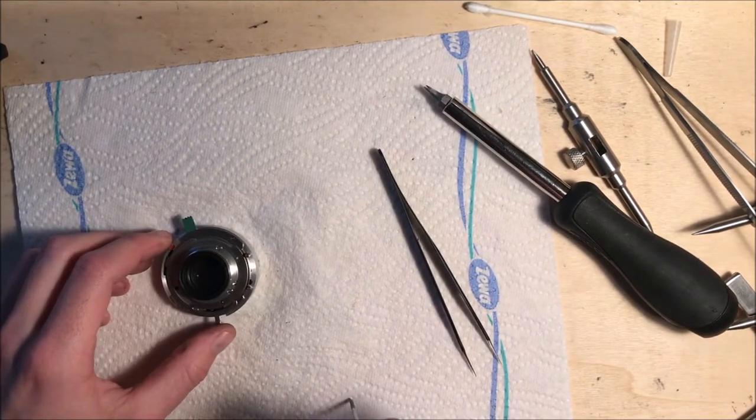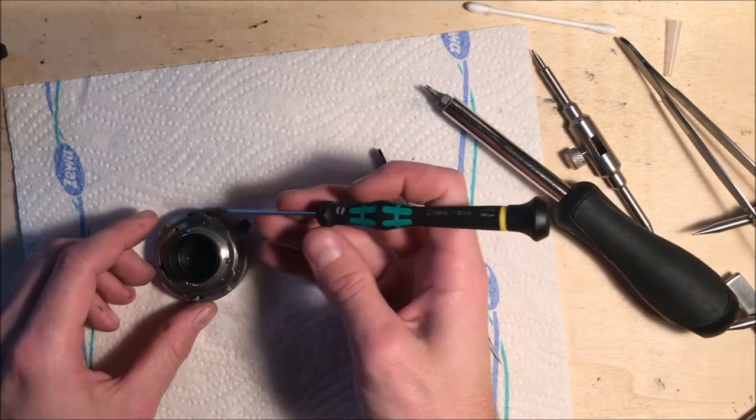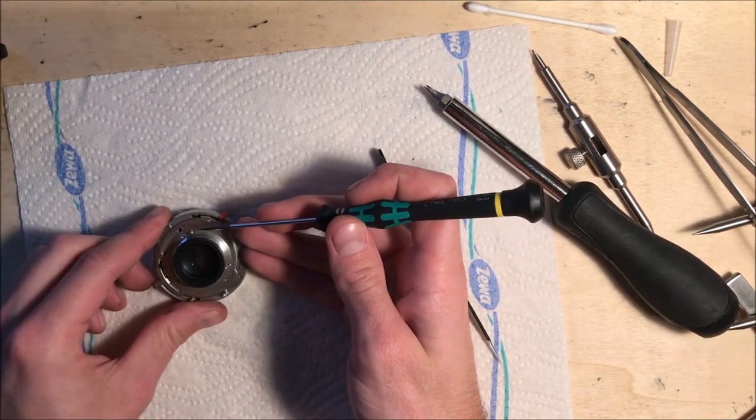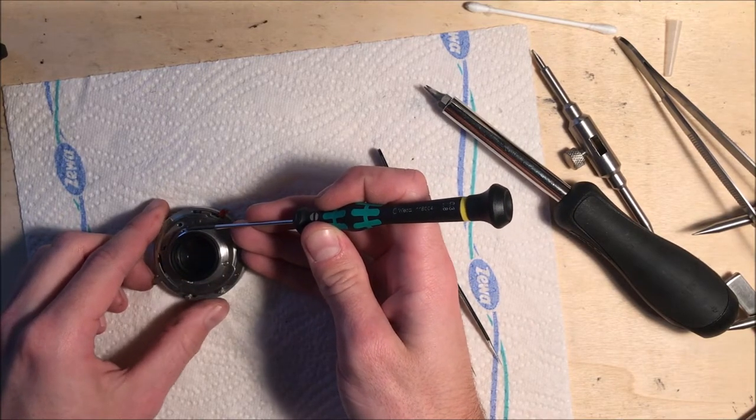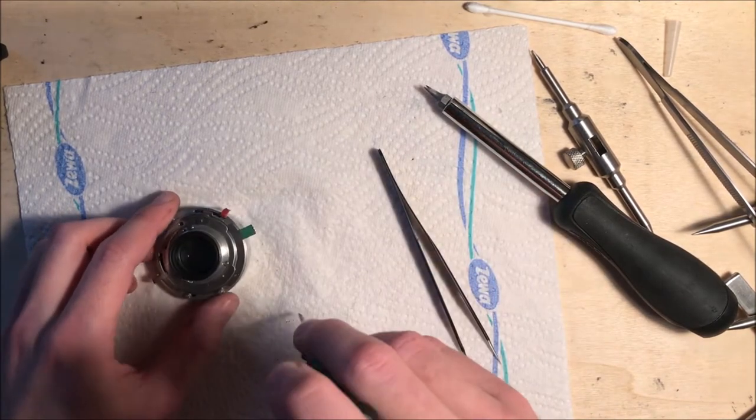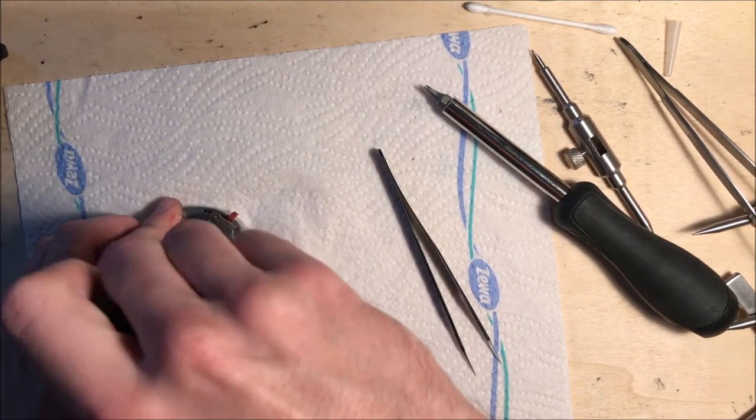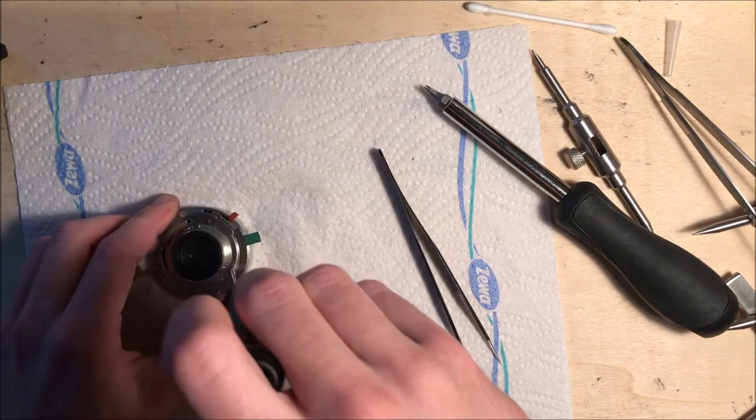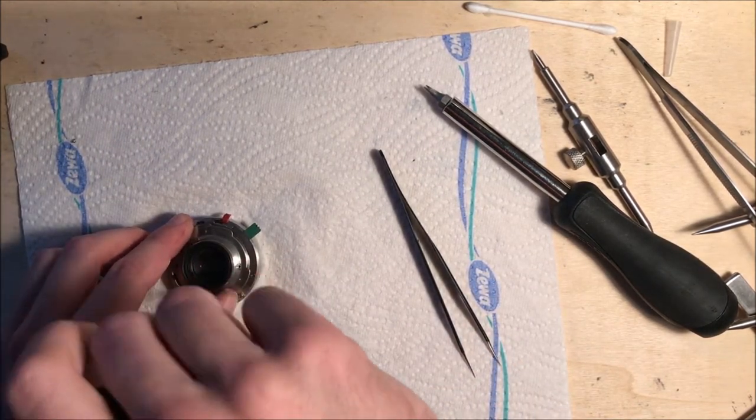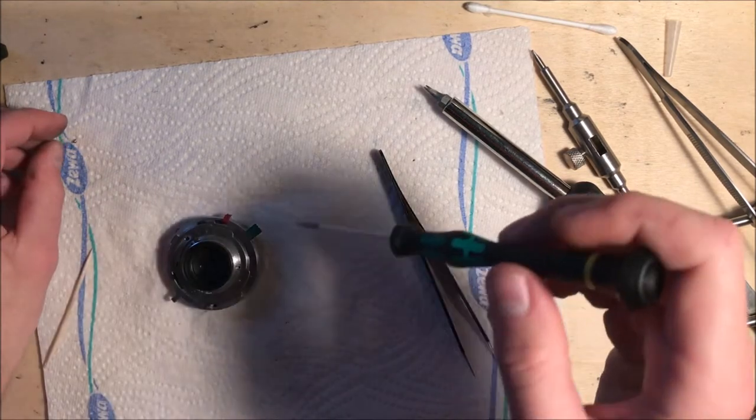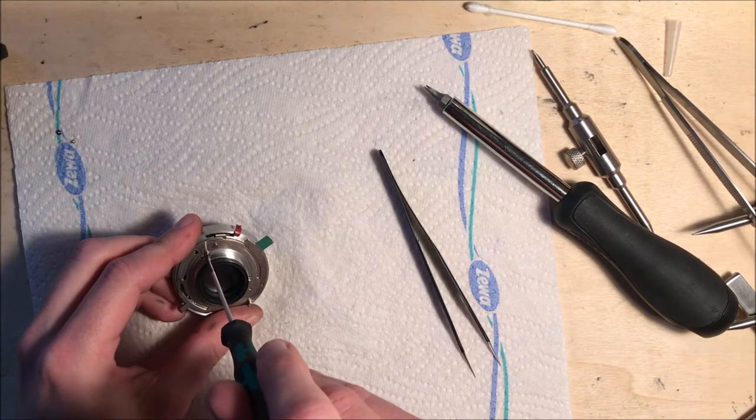Now to continue from this side, again three screws. One of them is a bit special because it holds the spring for the shutter, for the close-down aperture. And this is the special one.